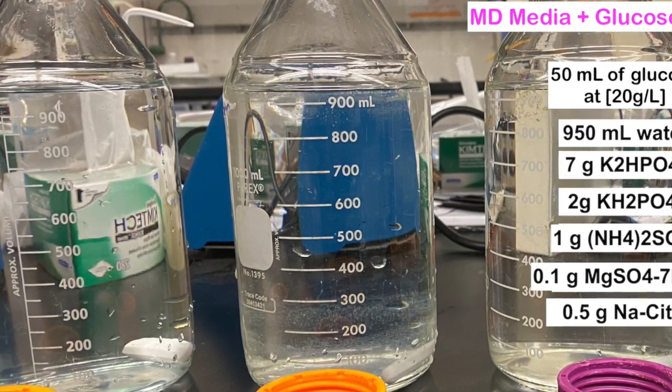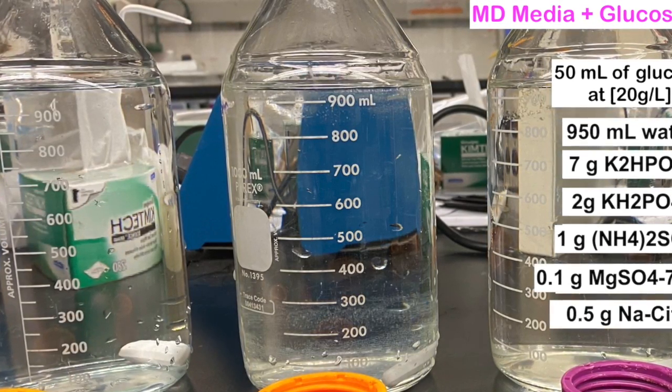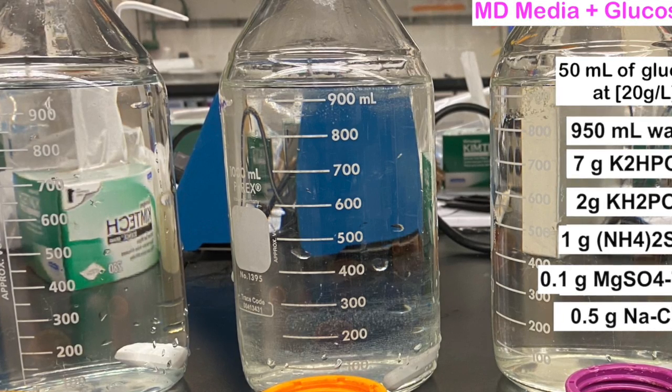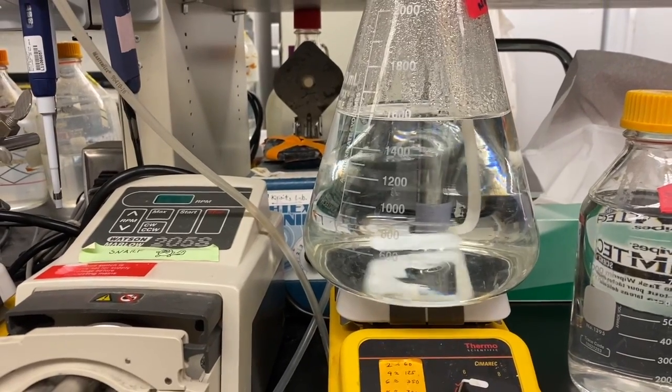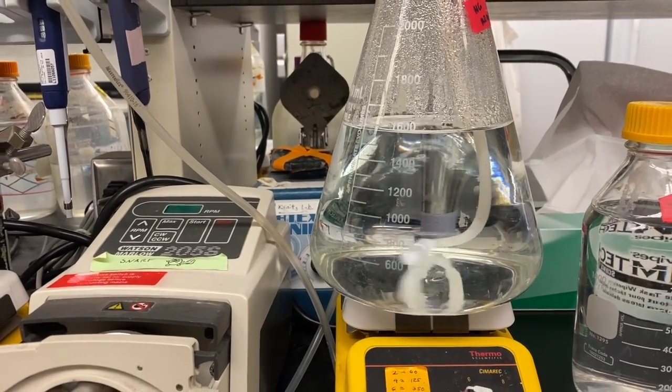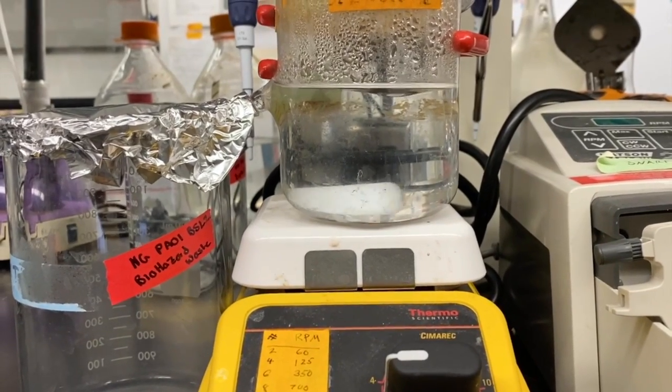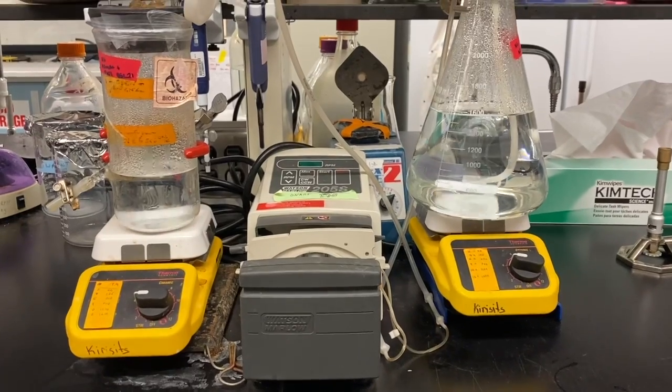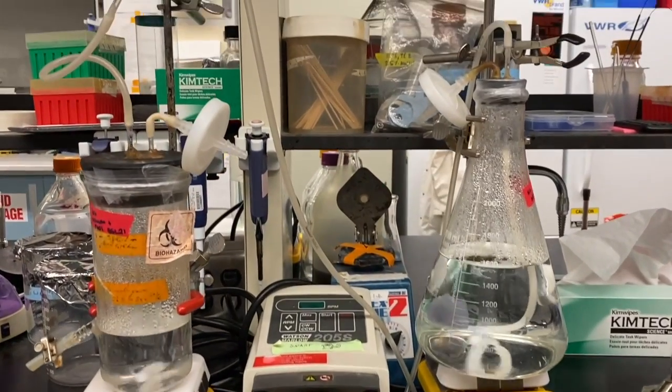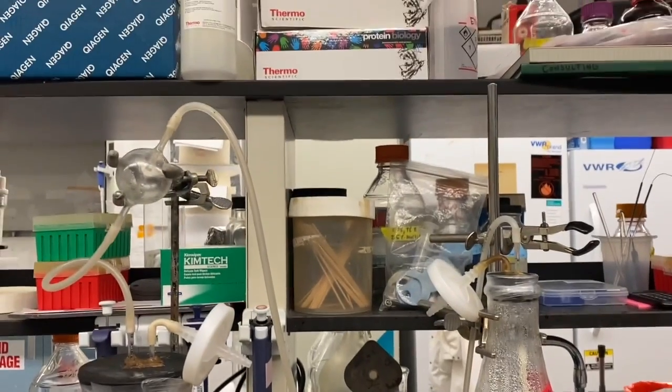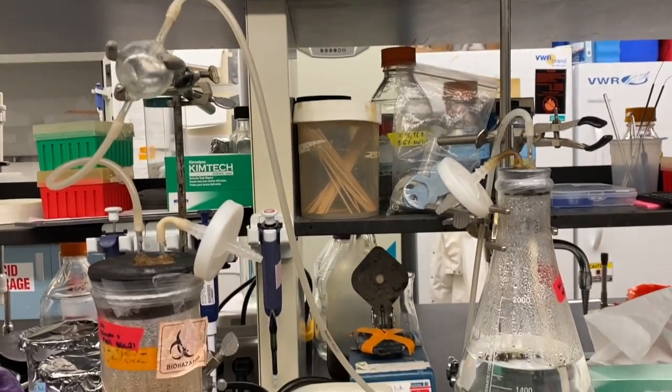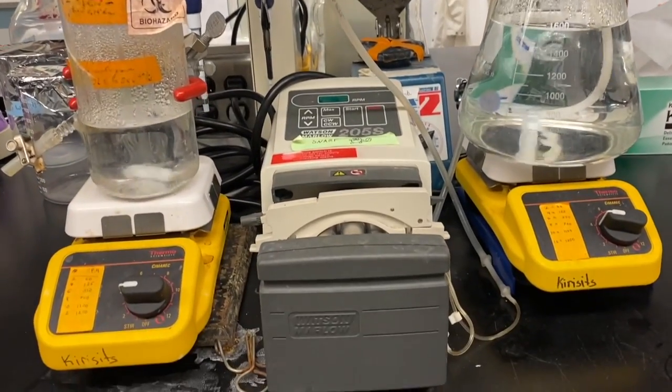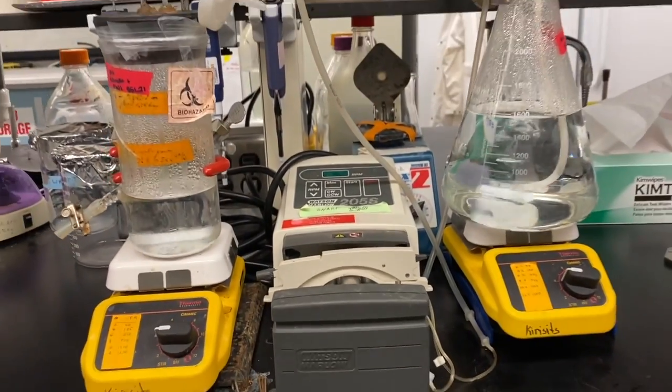The MD media now contains 950ml of water, 50ml of a glucose solution at 20g/L, and various salt species including 7g K2HPO4, 2g KH2PO4, 1g (NH4)2SO4, 0.1g MgSO4-7H2O, and 0.5g Na-Cit. Using aseptic technique, the new MD solution is added to both the growth chamber and the media chamber. In the growth chamber, it is only added up to the outlet height. The clamp on the growth chamber is left on. Tops of both chambers are parafilmed shut to maintain sterility. Both stir plates are turned on and set to the setting of 4.